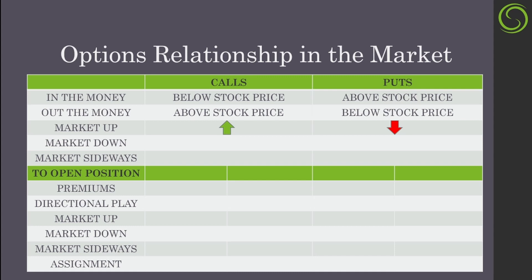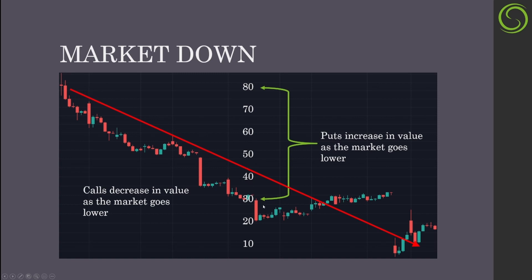Now let's look at what happens when the market goes down. Calls decrease in value because as we move to the right on a downward chart, fewer strike prices are in the money for calls. So call options will be decreasing in value as the market goes lower. Put options, on the other hand, will increase in value as the market goes lower, as more of the options' strike prices become in the money. Calls decrease in value as the market goes lower, and puts increase in value as the market goes lower.